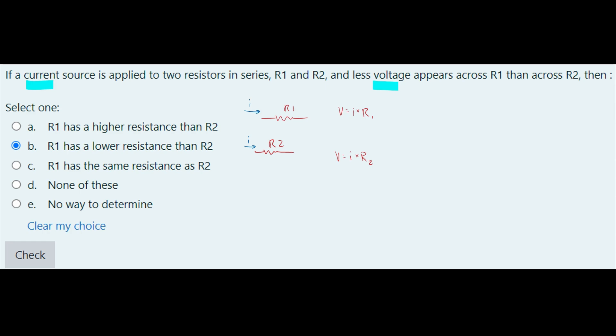We are going to be able to see that if the, again, current is the same, current is the same here, and our less voltage appears across R1, which means this one right here, we have less voltage than our R2.